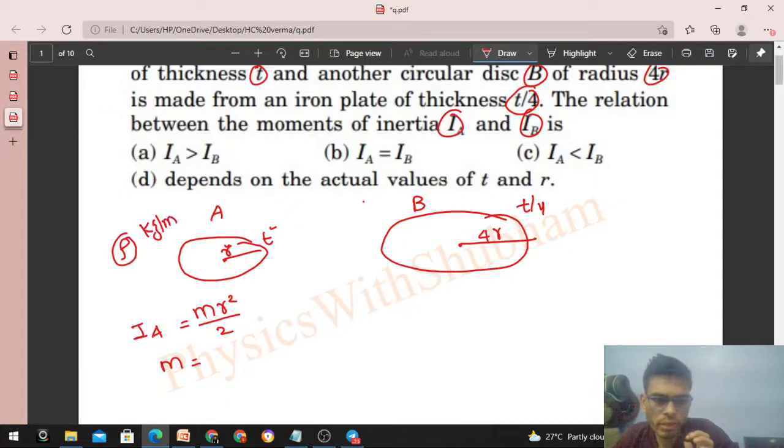What is mass? Mass is simply density into volume. Volume will be πr² (area) into thickness t. So you can put the value of mass: that will be ρ × π × r² × t × r² = ρπr⁴t/2. This is the moment of inertia of plate A.